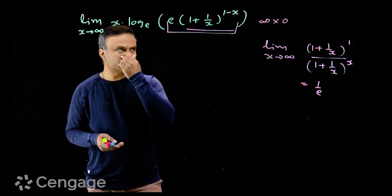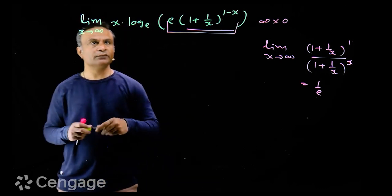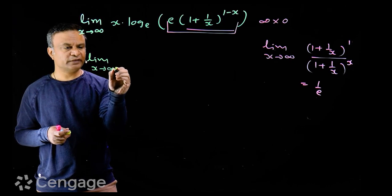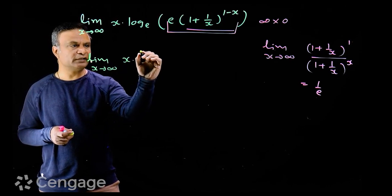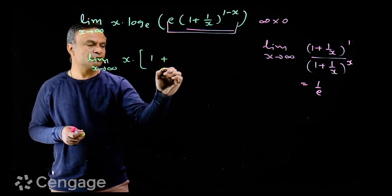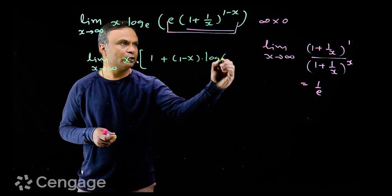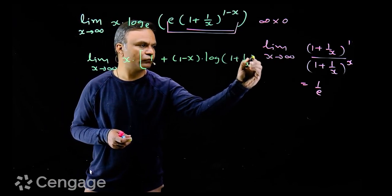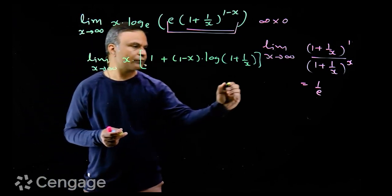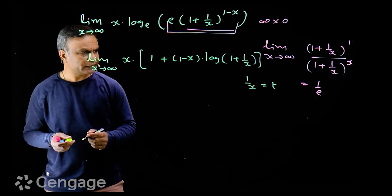So how do we get the limit? We first simplify this logarithm using properties of logarithm. We have the limit as x tends to infinity of x multiplied by log e to the base e, which is 1. So we have 1 plus 1 minus x multiplied by log of (1 plus 1 upon x). Now we use the substitution: let 1 upon x equal t. So when x tends to infinity, t tends to 0.